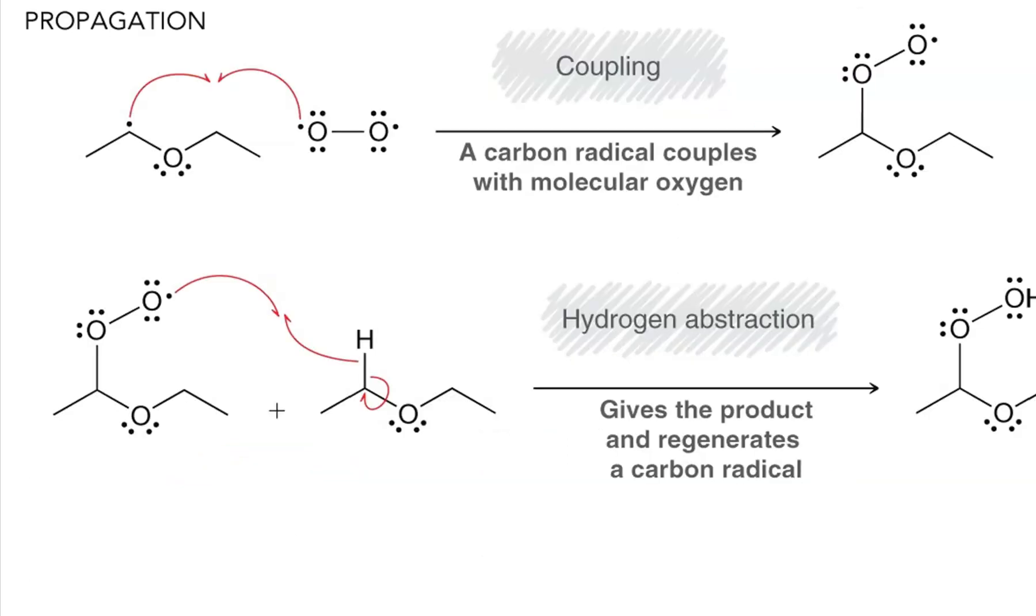In our first propagation step the ether radical couples with a molecule of dioxygen which has a diradical resonance structure. Those are the resonance arrows for dioxygen to form the diradical, and it produces this peroxy ether compound.